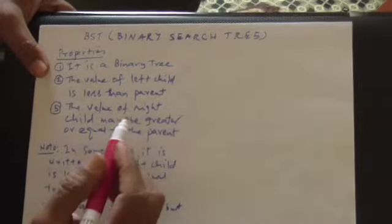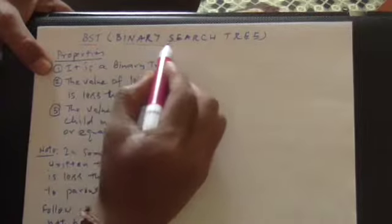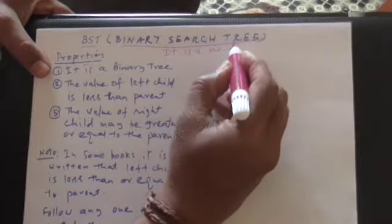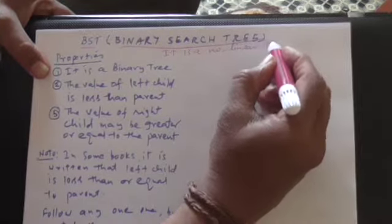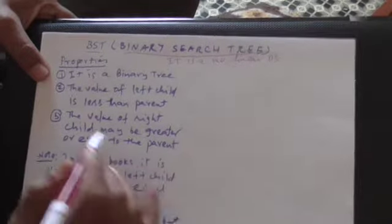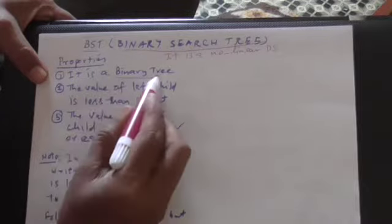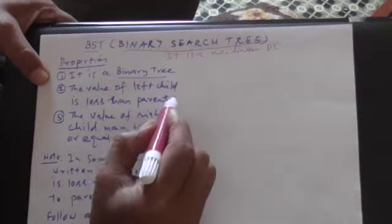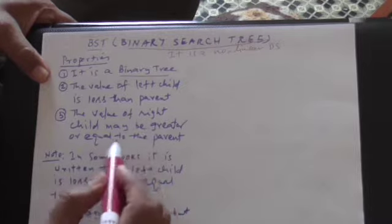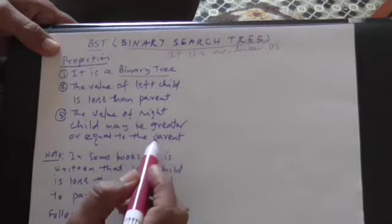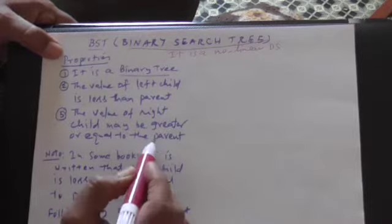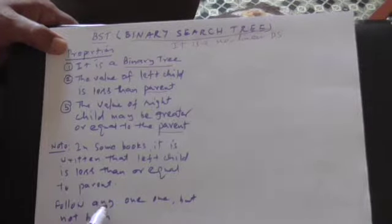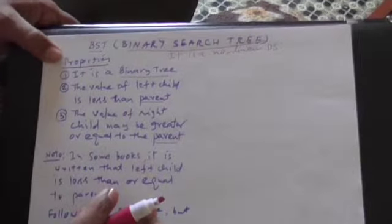Friends, today we are going to discuss about what is called a binary search tree. It is a non-linear data structure. What are the properties of it? First of all, it is a binary tree. Second, the value of the left child is less than the parent value. Third property is, the value of the right child may be greater or equal to the parent. One important point is, in some books they say the left child may be less than or equal to the parent. However, you follow only one criteria for it.